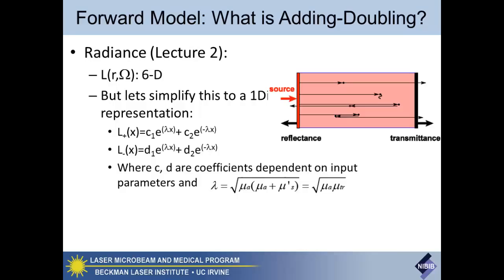By collapsing the entire equation down to one dimension, you can actually come up with a simple solution set for the radiance in the forward or backward direction — just coupled exponential equations where the exponent is based on your classical transport equation. Basically, what you're doing is taking a very complicated differential equation and simplifying it to a first-order equation, where the exponential solution is just a simple result from that.